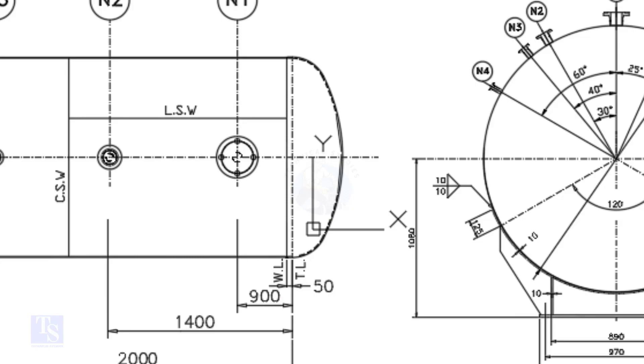The surface between the TL and the WL is called SF or straight face. Here, the straight face is 50 millimeters.